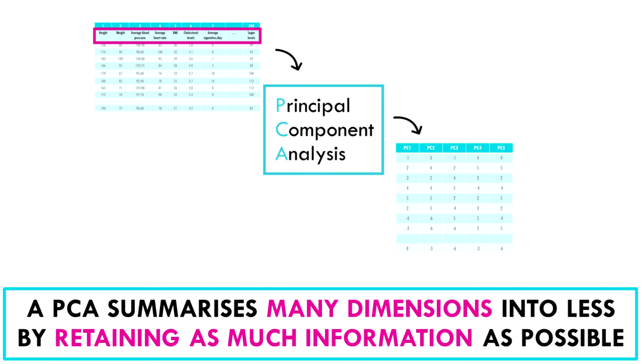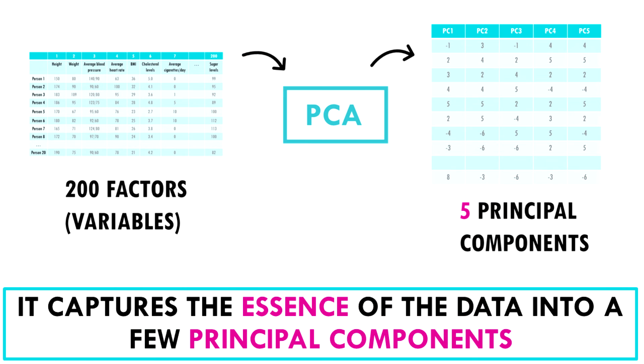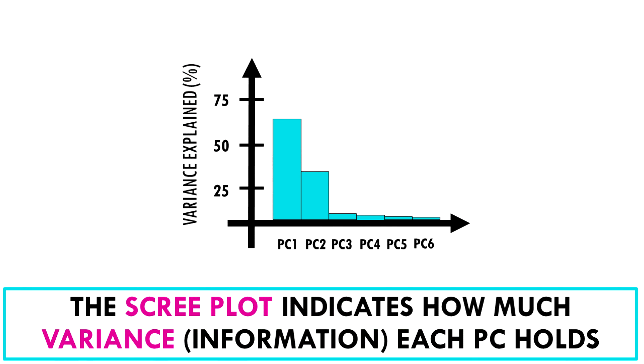So to sum up, PCA is a great way of summarizing large datasets with many dimensions into less dimensions, while retaining as much information as possible. It captures the essence of the data into a few principal components. Usually, it's enough to keep just the first two or three principal components, if they explain enough percent of the dataset. To check how much variance or information the first few principal components hold, you should look at a scree plot.